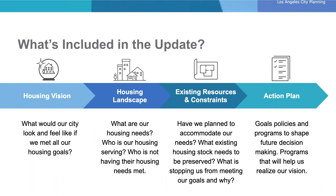The update will be guided by a vision establishing what our city would look like if we met all of our housing goals. It will look into our housing landscape and needs to determine who is served by the housing stock, how well they are being served, and who isn't. The update will analyze existing resources and constraints by evaluating if the city has the right land use and zoning requirements to meet its housing needs, look at our existing affordable housing stock and what needs to be preserved, and identify what is stopping us from achieving our housing goals. Finally, we will create an action plan of goals, policies, and implementation programs to realize our vision. Over the next two years, City Planning and HCID will use your input to assess the city's housing needs, list existing constraints and resources, and make an action plan.